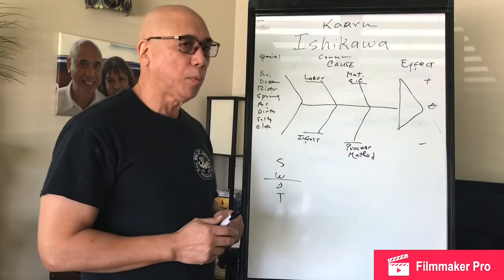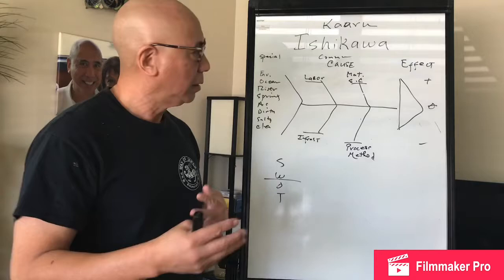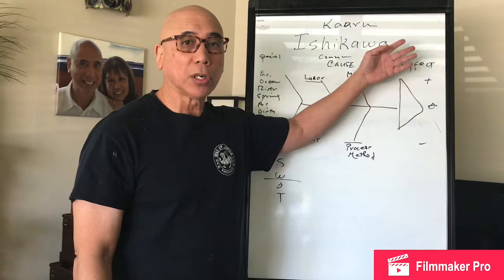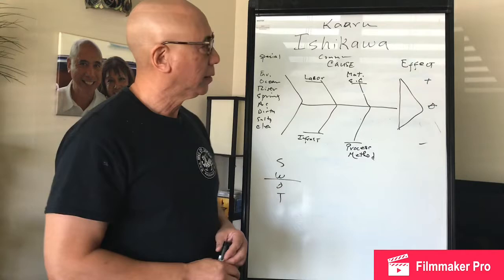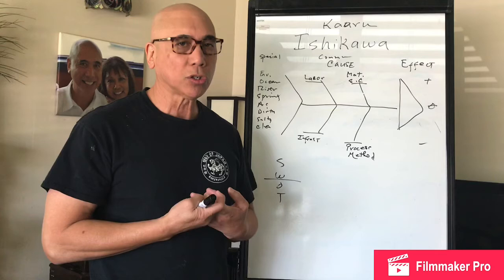You can use the Ishikawa fishbone diagram to meet your goals and objectives in two ways. The first is to determine the root cause of a bad effect or a good effect. The second is as a planning methodology so that we can ensure a strong effect.